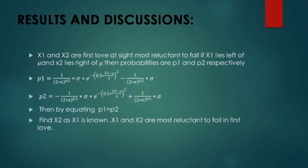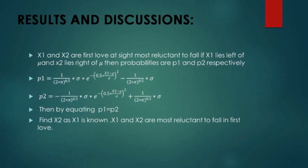If x1 is the first-love side most reluctant to fall — with x1 left of the mean and x2 right of the mean — then the probabilities are p1 and p2 respectively. p1(x1) = (1/(√(2π)·σ)) · e^(−0.5·((x1−μ)/σ)²) minus (1/(√(2π)·σ)), and p2 involves e^(−(1/(2π·σ²))·((x2−μ)/σ)²) plus (1/(√(2π)·σ)). If x1 is known we calculate x2, and if x2 is known we calculate x1.